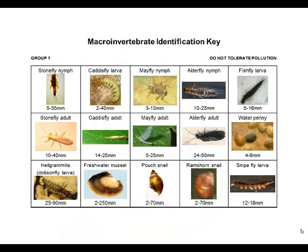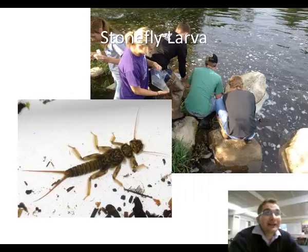Here are a number of other Group 1 macroinvertebrates: stonefly nymphs, caddisfly larvae, mayfly nymph, alderfly nymph, fishfly larvae, and water pennies. We can also look for adults — stoneflies, caddisflies, mayflies, and alderflies. If we find adults, we can assume that the young, the larvae or nymphs, have lived there as well or are living there. We can look for hellgrammites, which are dobsonfly larvae. Freshwater mussels and pouch snails are also good indicators of healthy stream conditions, along with some different types of snails.